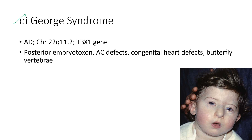Next is DiGeorge syndrome. It is an autosomal dominant condition. The clinical features include posterior embryotoxon, anterior chamber defects, congenital heart defects, and butterfly vertebrae, as shown in the clinical picture.